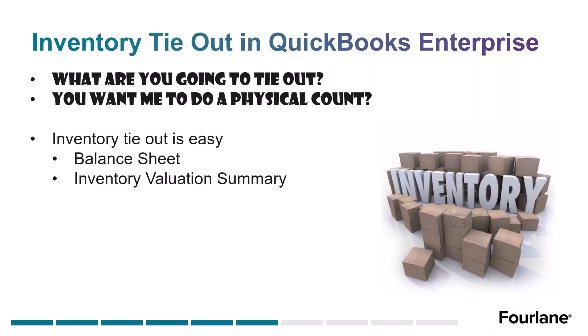When you get done with those things and make your adjustments in QuickBooks, you always want to make sure that your inventory is tied out to the balance sheet. Two things you want to remember: I need my balance sheet inventory value and I need my inventory valuation summary to tie. If those things tie, then we are good — that's our objective.